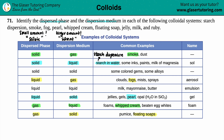Jelly: you have a dispersed phase of liquid — a small amount of liquid going into a solid — and that's why jellies have that kind of consistency where it's not a liquid running all over the place; it is a solid.